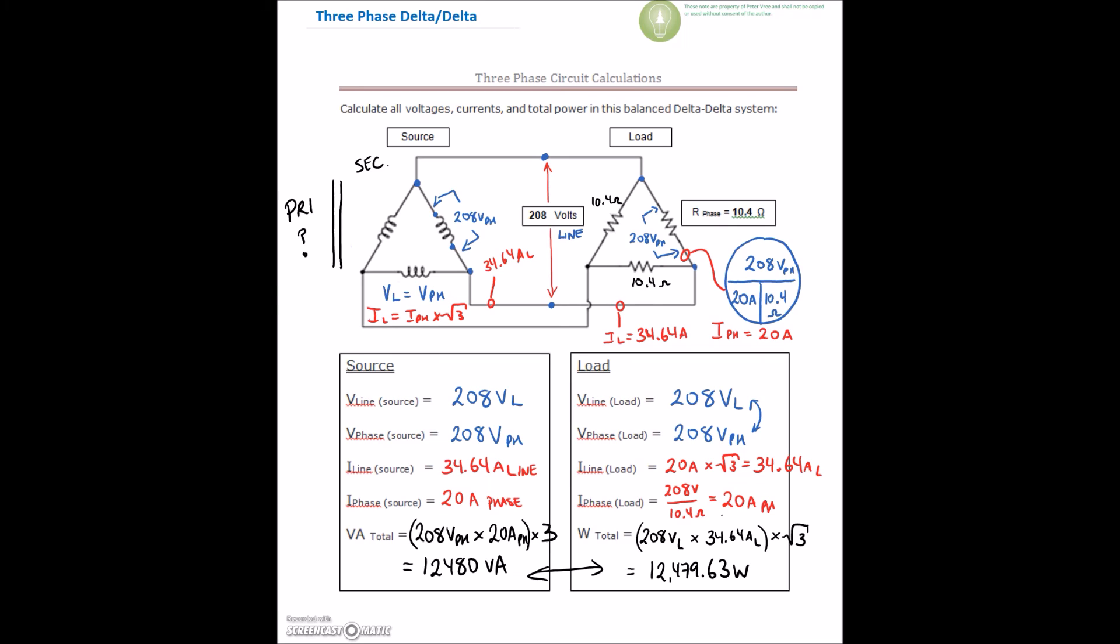Let's just walk through one more time what we did. We took the 208 volts on the line. We found that it was identical voltage on the phase. We took that 208 divided by the 10.4, and we found 20 amps on the phase. There's 20 amps here, and there's 20 amps here, but they're not happening at the same time.